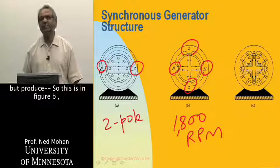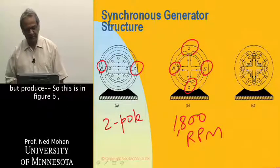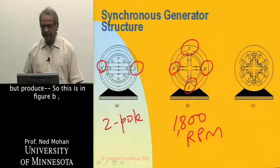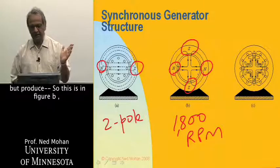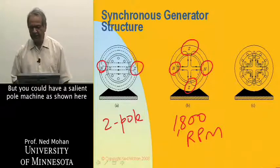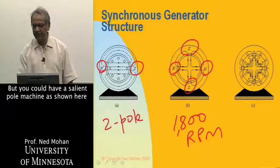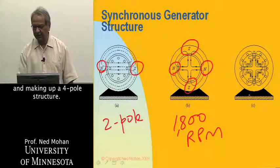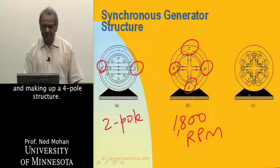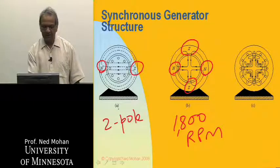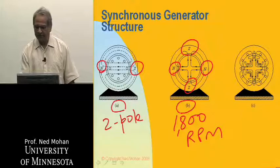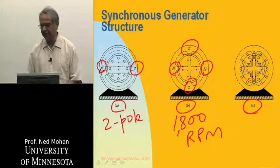just like we have in figure A. So regardless of what axis you're looking at, the reluctance is the same. But you could have a salient pole machine, as shown here, making up a four-pole structure. So these two are, A and B are non-salient pole, and this is a salient pole machine here.